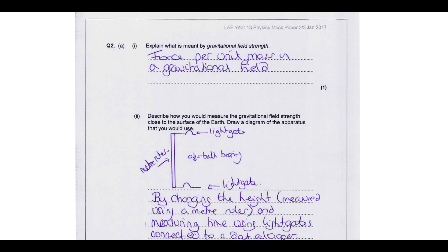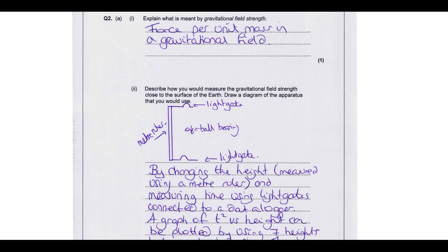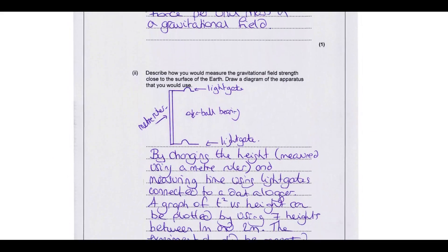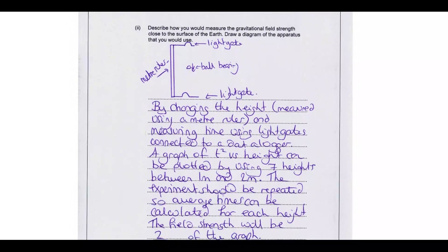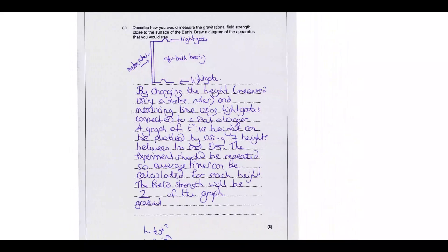So the second one is looking at gravitational field strength and how we can go about measuring this. This question is essentially about linking into the g by freefall practical, which is why we stuck it in this mock exam. So the first thing is, what is gravitational field strength? Well, it's the force experienced by a unit mass in a gravitational field. Something you just have to know, their definition. But the key thing to recognize is it's also, on earth anyway, known as little g or the acceleration due to gravity.